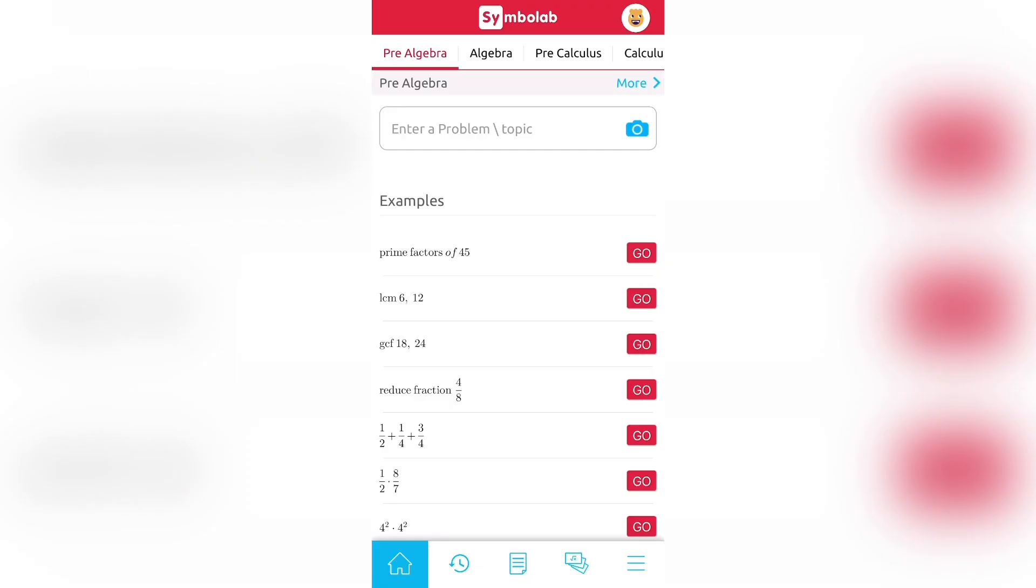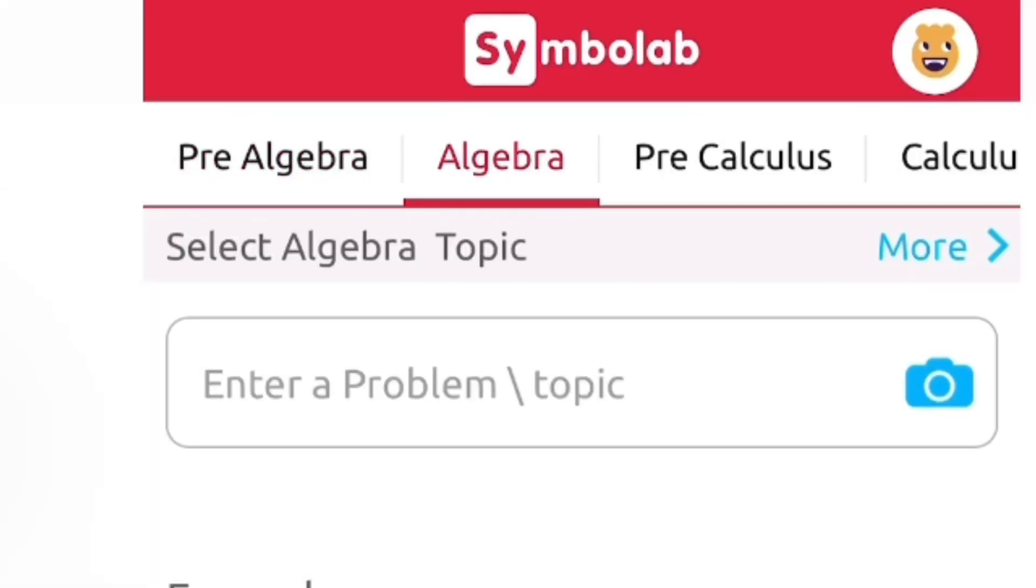Now unfortunately, this app does not work for word problems because it cannot necessarily calculate different words. It is only meant for calculating equations and math problems that are in numerical factors. In order to enter a problem, simply find the topic that you want to do. So let's say that I have a problem in algebra. I would go ahead and click the algebra topic.